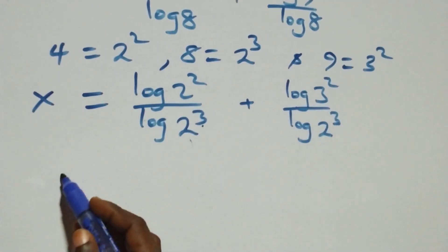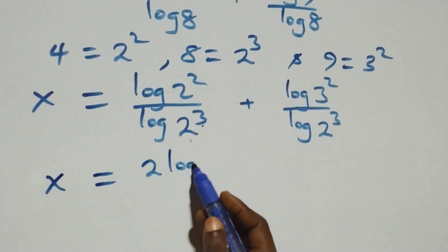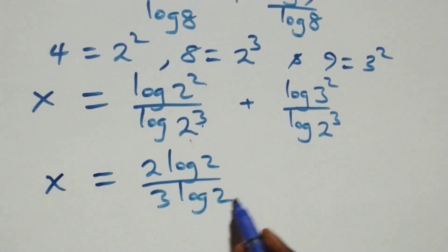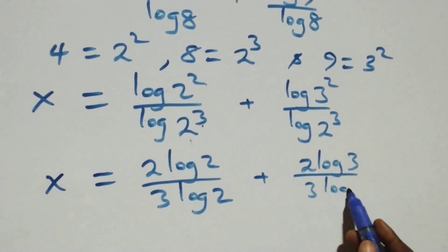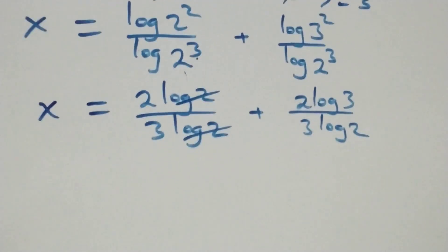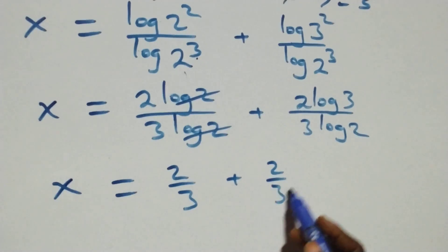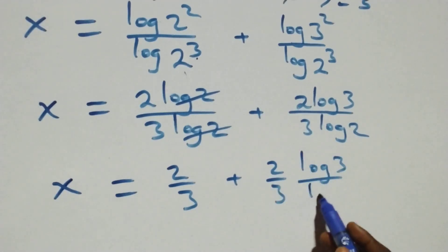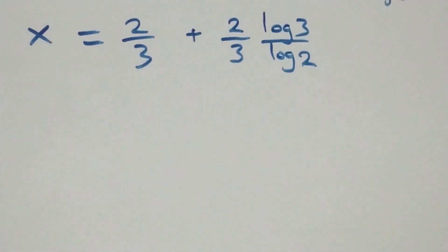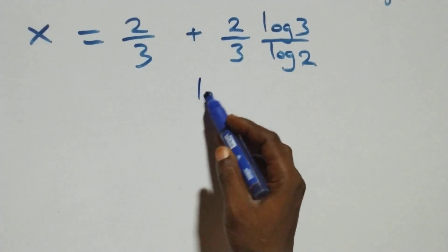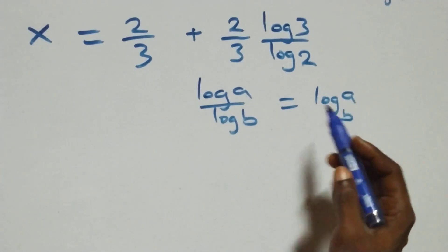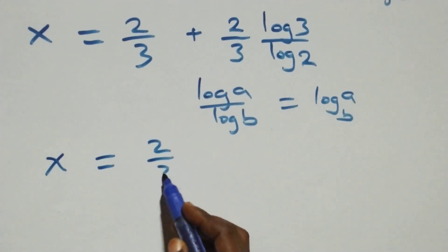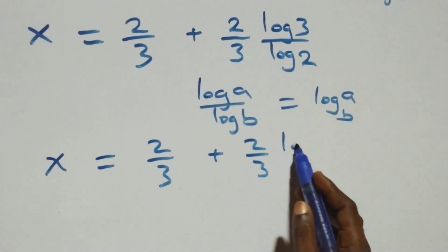So two comes in the numerator and three comes in the denominator, and we have x equals 2 log 2 over 3 log 2 plus 2 log 3 over 3 log 2. The log 2 terms cancel, giving 2 over 3 left. Applying the change of base rule — log A over log B equals log A to base B — we have x equals 2 over 3 plus 2 over 3 times log 3 to base 2.